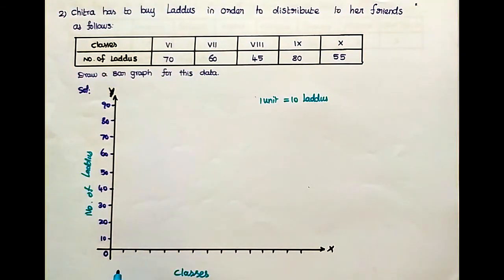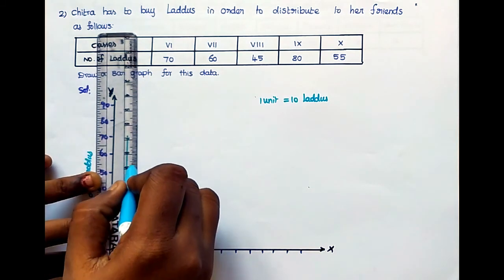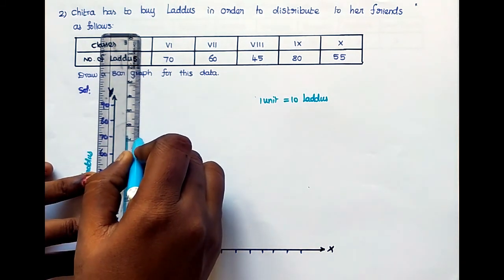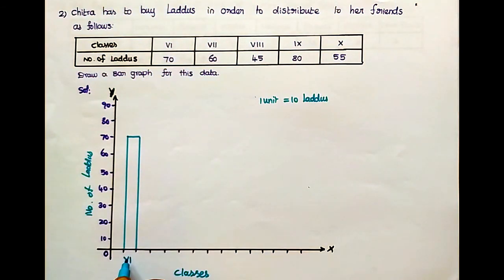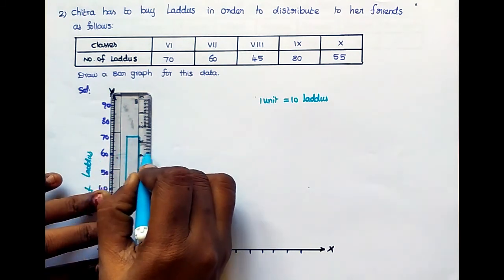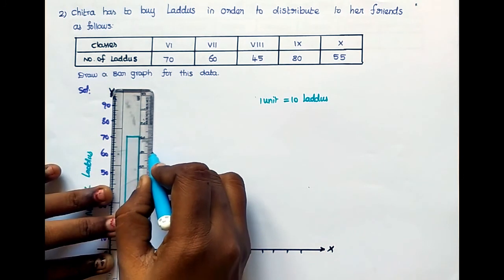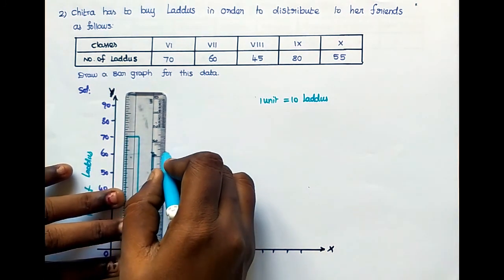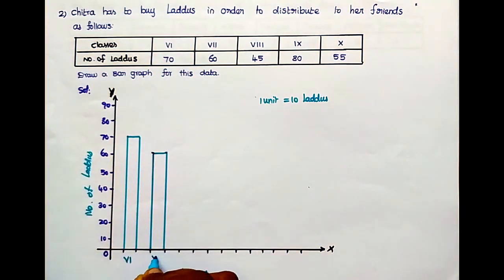First one, 6th standard 70 laddus. Take your scale. Here the 70. That is 6th standard. Next, 7th standard 60. Here the 60. That is 7th standard.